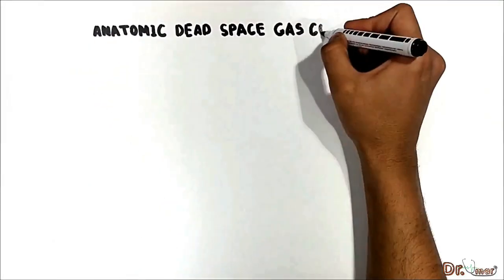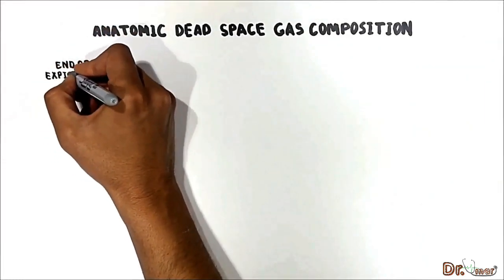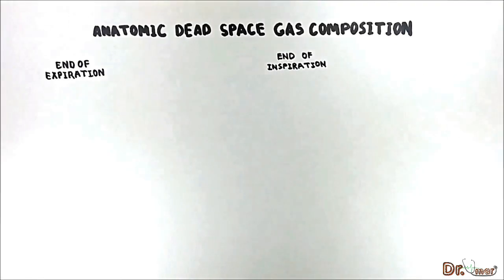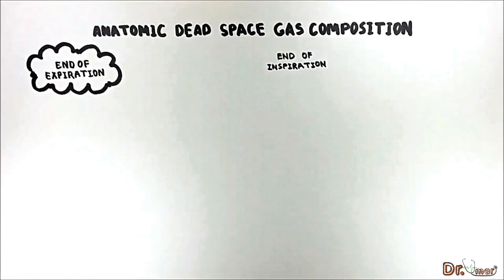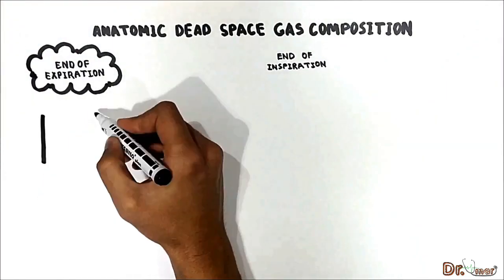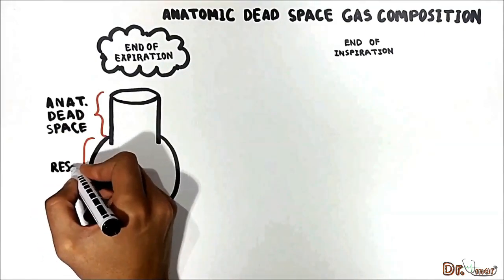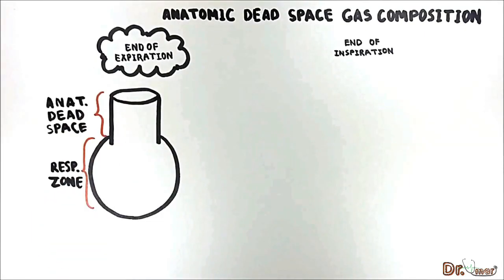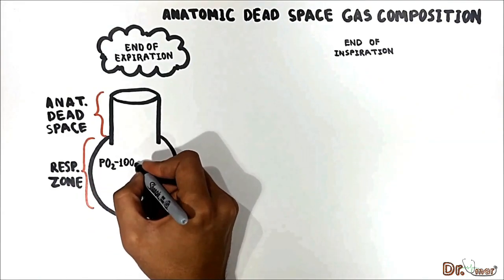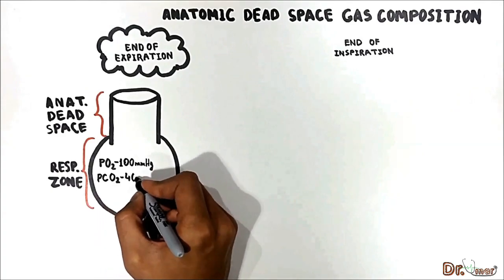In this part of the video we will talk about anatomic dead space gas composition at the end of expiration versus at the end of inspiration. Note that end of expiration means it is just before inspiration begins, since breathing is cyclic. Consider the lung as a simple balloon model: the neck of the balloon is the anatomic dead space and the remainder is the respiratory zone. The partial pressure of oxygen in the alveolar compartment is 100 mmHg and carbon dioxide is 40 mmHg.